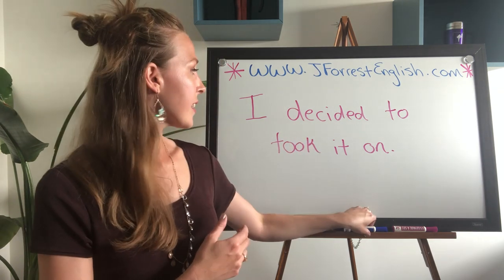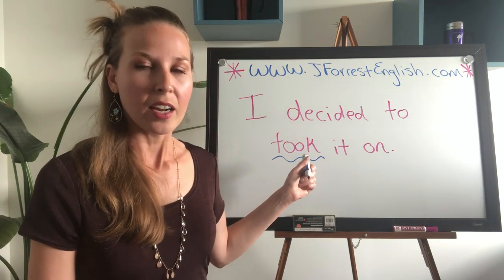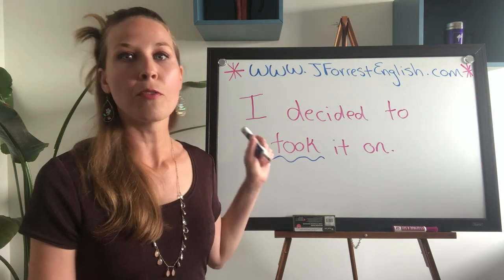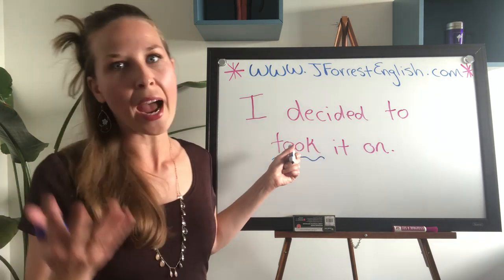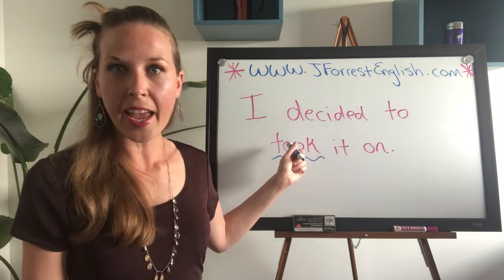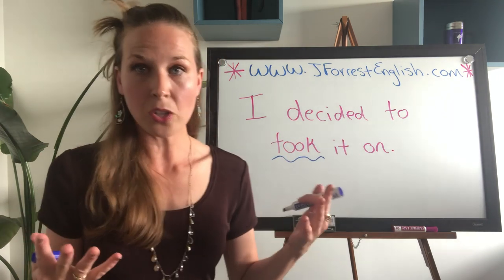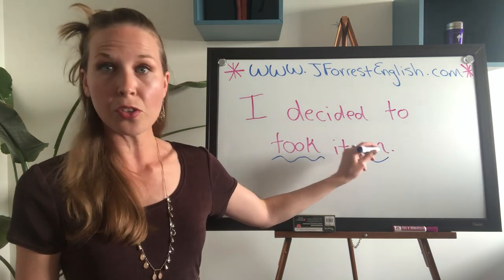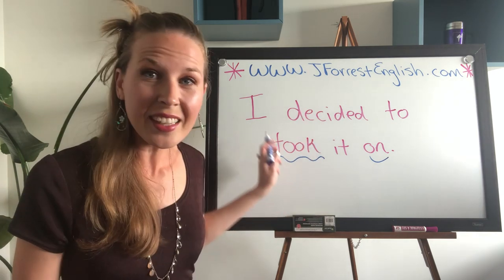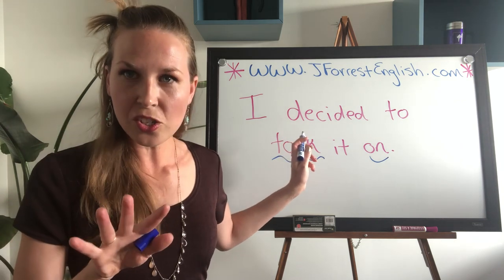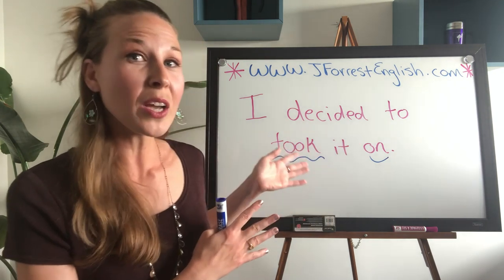The mistake is with our verb — this verb is in the wrong verb tense. It's in the past simple. The verb is 'to take,' and the expression is 'to take something on' — that's the phrasal verb, a verb and a preposition. But this violates basic English sentence structure. So let's go back to the basics and review basic English sentence structure, and then this mistake will be obvious to you.